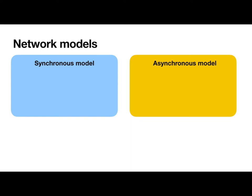In the synchronous model, messages arrive within a fixed delay denoted by delta. In the asynchronous model, on the other hand, there's no upper bound on message delay.